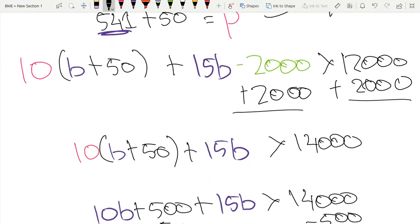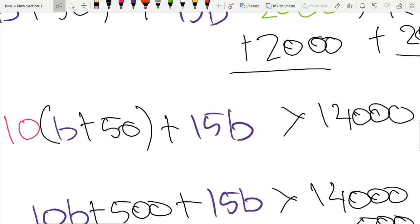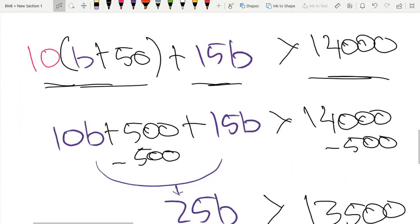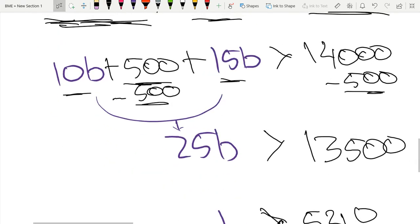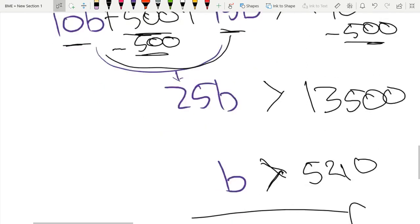So we added 2000 to both sides of the equation. Now we have 10 times B plus 50 plus 15B is greater than 1400. So now we distributed this to get 10B plus 500 plus 15B is greater than 1400, subtracting 500 from both sides and combining like terms. We got 25B is greater than 13,500.